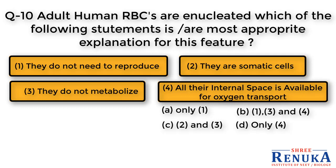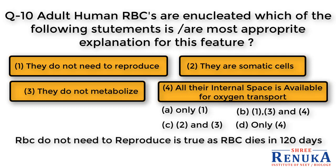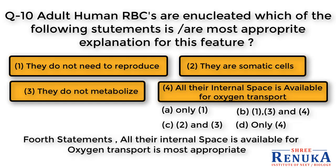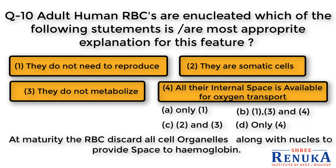Option 1 — RBCs do not need to reproduce — is true, as RBCs die in 120 days and new RBCs form in red bone marrow by hematopoietic stem cells. However, option 4 — all their internal space is available for oxygen transport — is the most appropriate explanation. At maturity, RBCs discard all their cell organelles along with the nucleus to provide space to hemoglobin. This is the main reason why adult human RBCs are enucleated, and so we select option 4 as the answer.